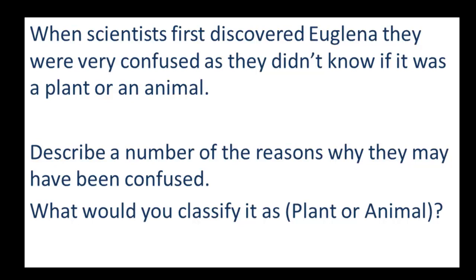So our question for you today is about thinking about when scientists first discovered Euglena, they were very confused because they didn't know whether to say it was a plant or an animal. They just didn't know how to classify it. We're asking you to describe a number of the reasons why they may have been confused, why they may have thought it was a plant or an animal or not been able to decide. And what would you classify it as? A plant or animal. We'd like you to answer the first question in lots of detail and say what you classify it as as well.